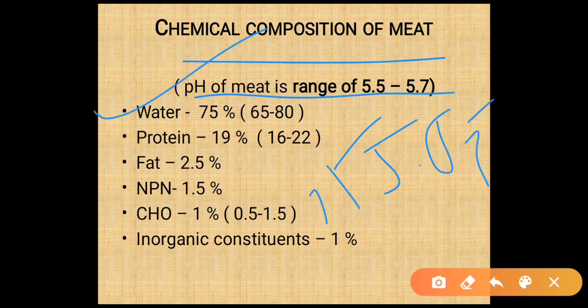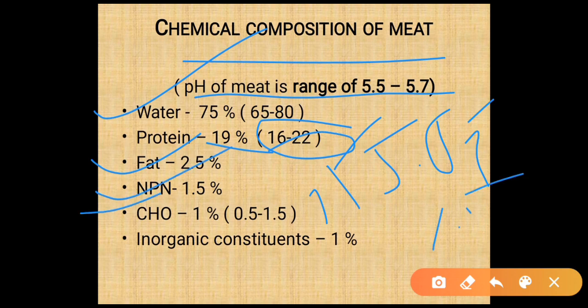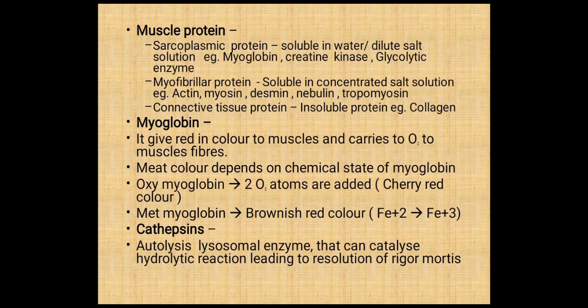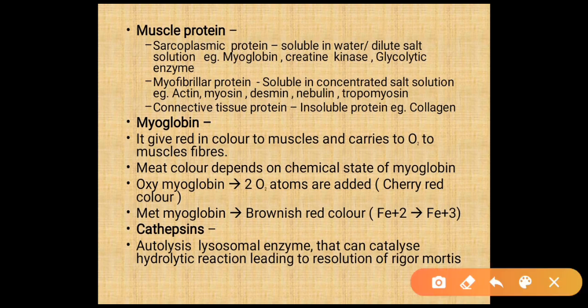Chemical composition of meat: pH is about 5.5 to 5.7. Water content is about 75%, ranging between 65 to 80%. Protein content is about 19%, ranging from 16 to 22%. Fat content is 2.5%. Non-protein nitrogen is 1.5%. Carbohydrate is about 1% (0.5 to 1%), and inorganic constituents are 1%.